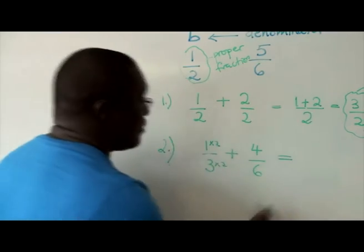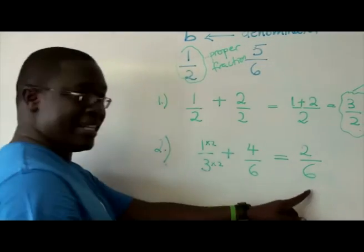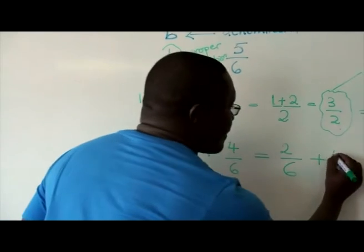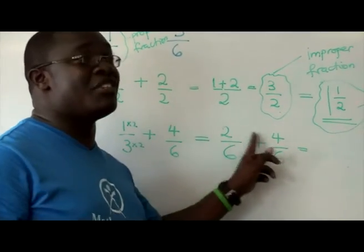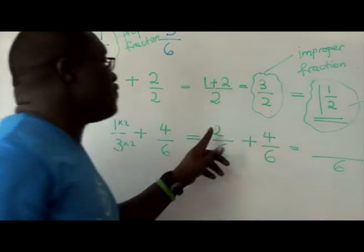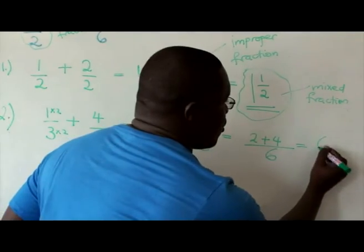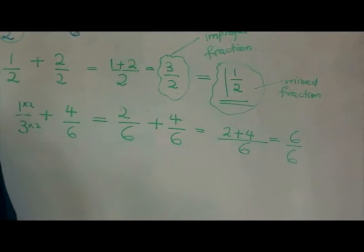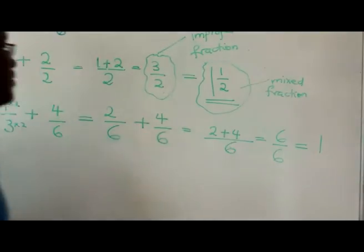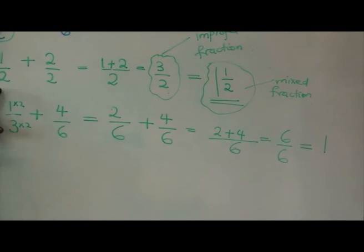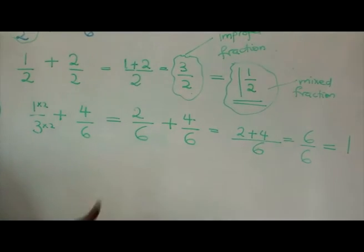I will rewrite it now. 2 times 1 will give me 2 over 3 times 2, which is 6, plus 4 over 6, which is equal to... Because now the denominator is the same, I can move on to just simply add the numerator. 2 plus 4, which is equal to 6 over 6. How many times does 6 go into itself? Once. So the answer here would be 1. That is how you add fractions.